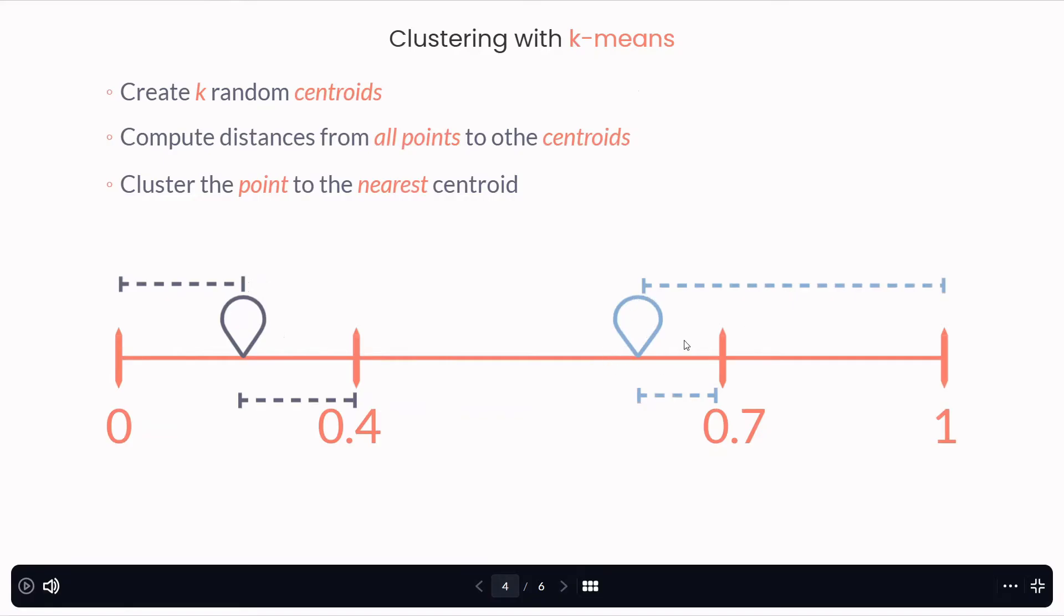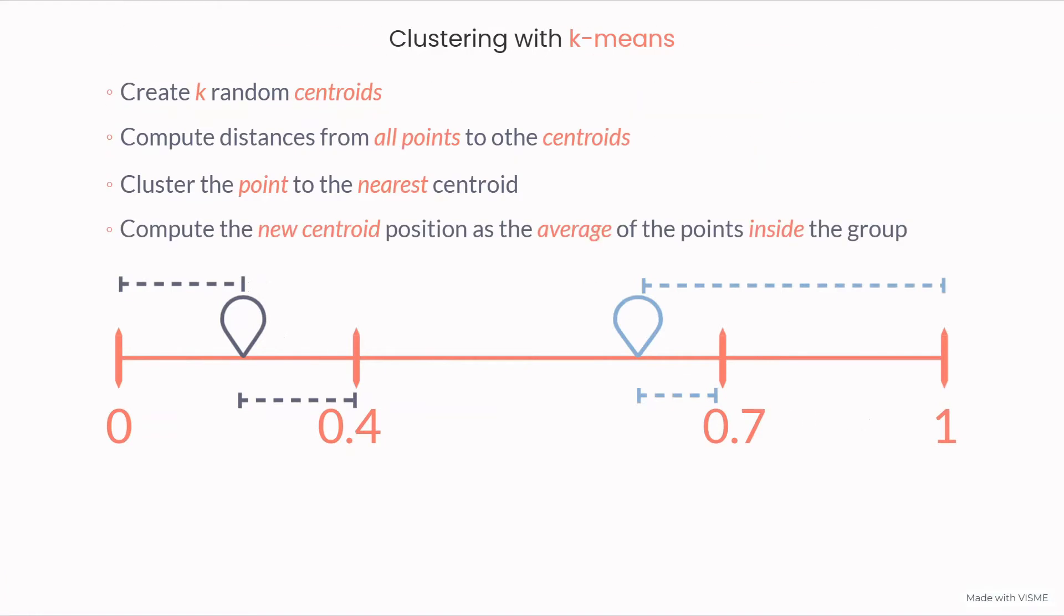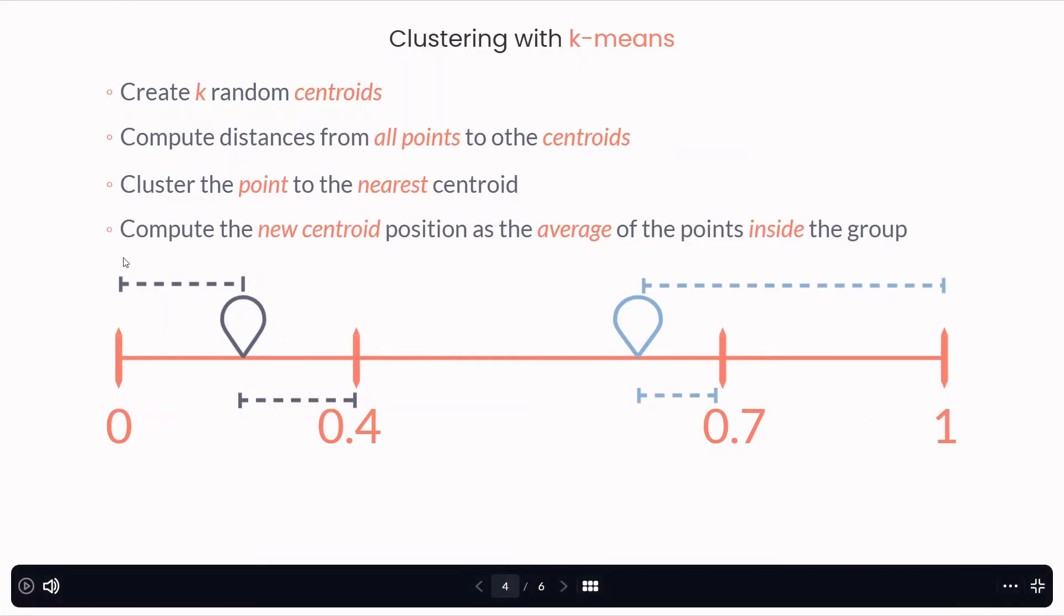After I have classified them to the nearest centroid, I'm going to compute a new centroid position as the average of all the points inside the group. Here on this specific example, the centroid is already in the middle of 0 and 0.4, so the centroid will not change so much. But from 0.7 and 1, the new centroid probably is going to be here in the middle, because the average position is probably here.